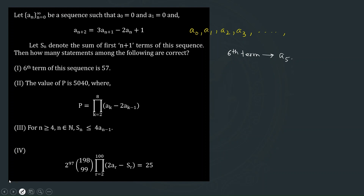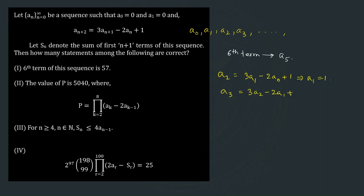Using the recurrence relation, putting n = 0 gives a₂ = 3a₁ − 2a₀ + 1. Since a₀ and a₁ are both 0, we get a₂ = 1. Then putting n = 1 gives a₃ = 3a₂ − 2a₁ + 1 = 3(1) − 2(0) + 1 = 4. So a₃ = 4.